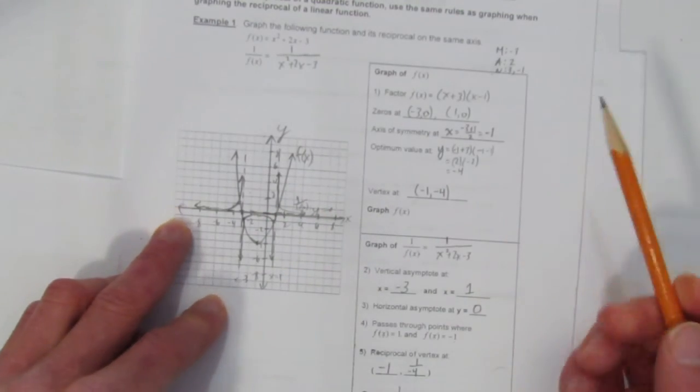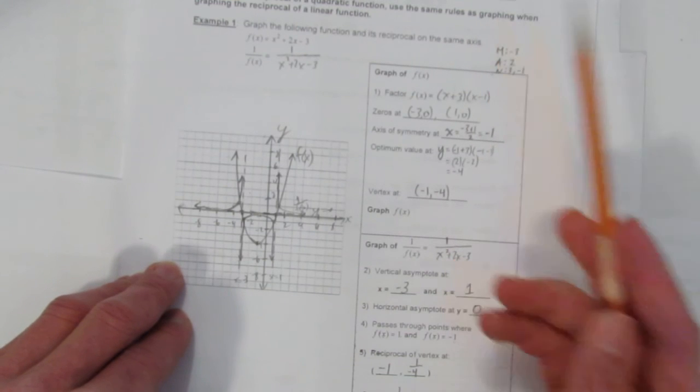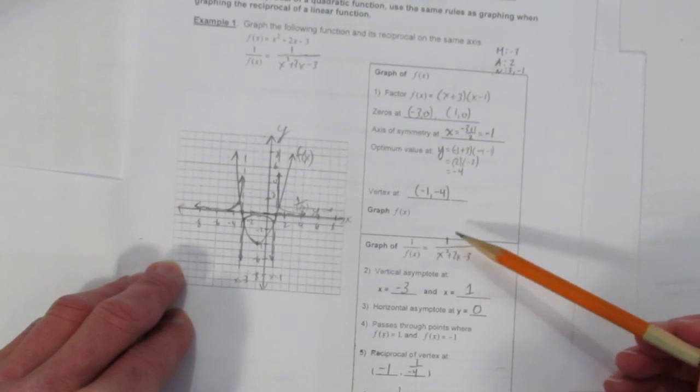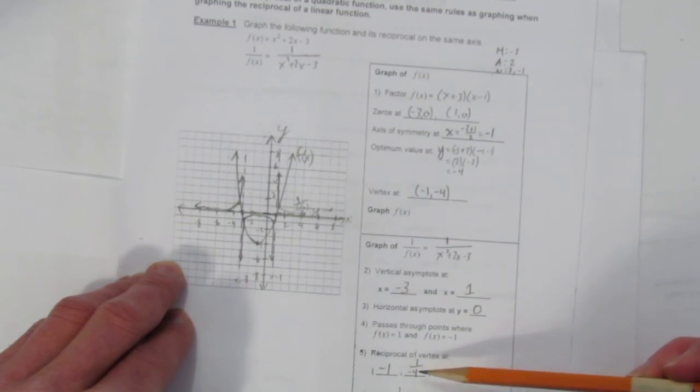So how did we graph the reciprocal of a quadratic function with two zeros? We graphed the original equation, and then we used its properties to determine the properties of the reciprocal. And there you have it.